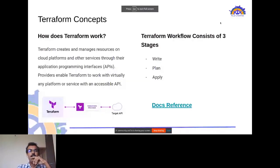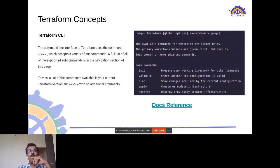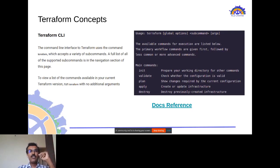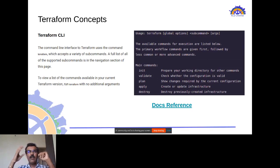Terraform has an executable called the Terraform CLI, which provides various commands to manage infrastructure. The `terraform init` command initializes the backend, looks for providers defined in the HCL files, and downloads them to the local environment.